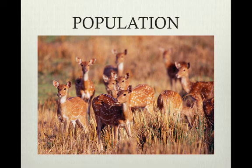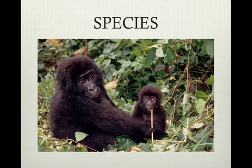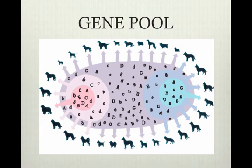A population is a breeding group of individuals of the same species that inhabit a common area. A population is the smallest unit that can evolve. A species is a group of interbreeding individuals that produce healthy fertile offspring. When we talk about a gene pool, we talk about all of the genes of all of the individuals in a population.